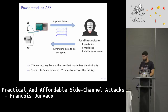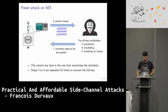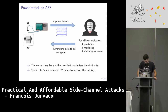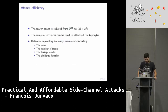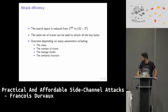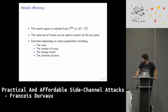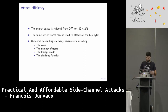A model is how you think the intermediate values will appear in the traces. You compute the similarities, and the correct key candidate will be the one returning the highest similarity with the traces. You repeat these steps 32 times to get the whole key, reducing the search space from 2^256 down to 32 times 2^8 — quite significant. You can also use the same set of traces to attack all key bytes, though attack efficiency depends on many parameters that should be chosen appropriately.